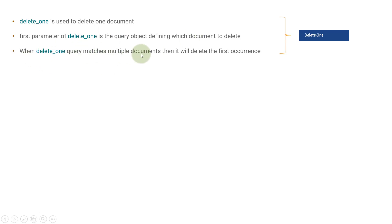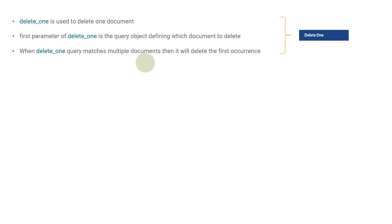When delete_one matches multiple documents, it will delete the first occurrence. Let's say you have more than 1000 records in your collection with data related to different users, with different ages like 10, 20, 30, 50. If you call delete_one with a filter query age equal to 10, there can be more than one user with age 10, but delete_one will only delete the first occurrence. If there are 10 or 15 users with age 10, it will delete only the topmost document — it will not delete all the documents.